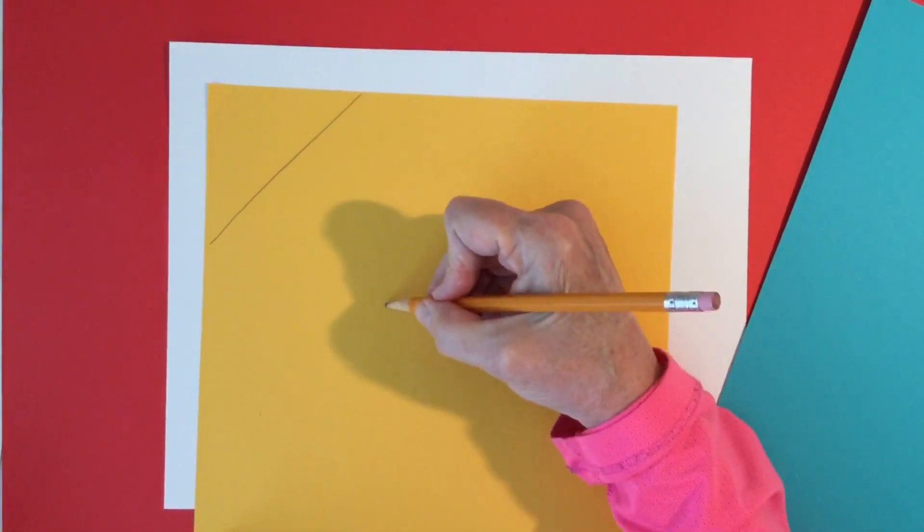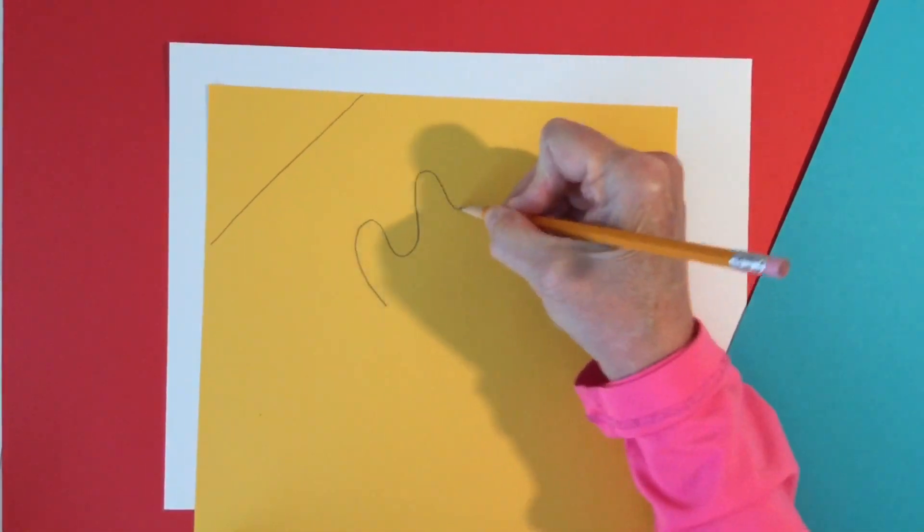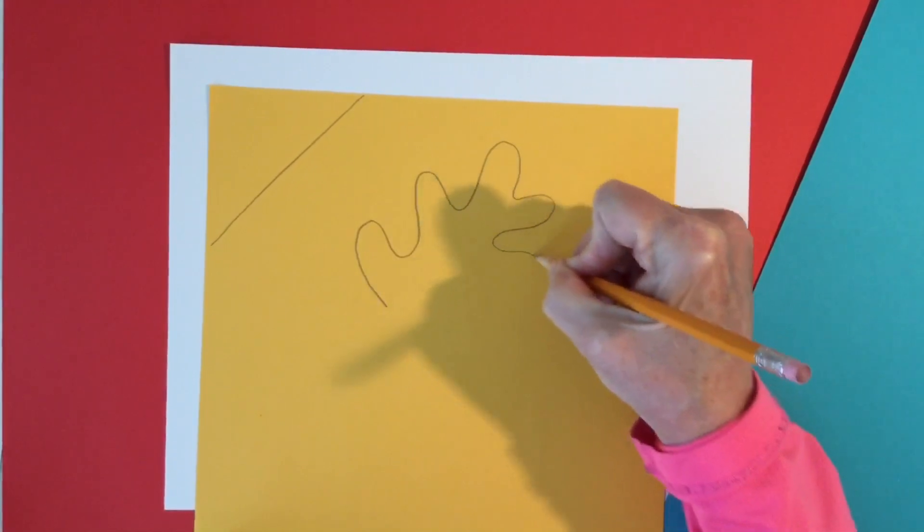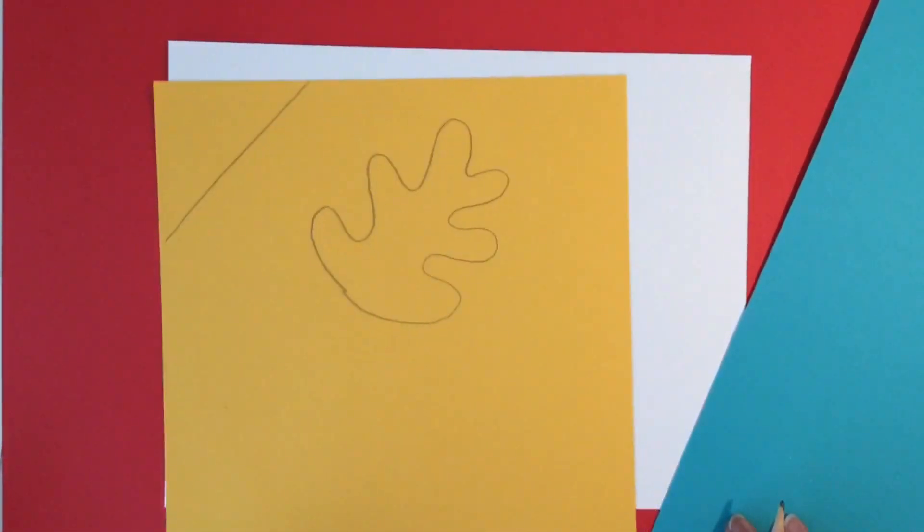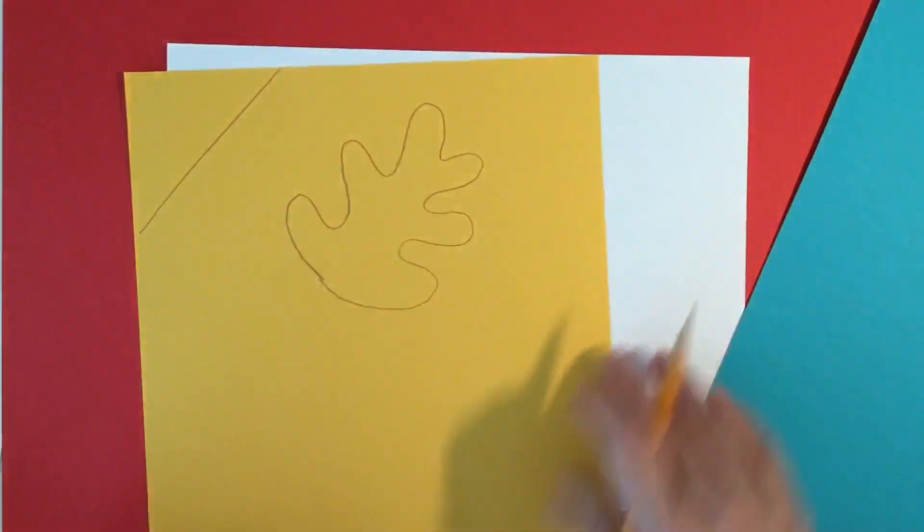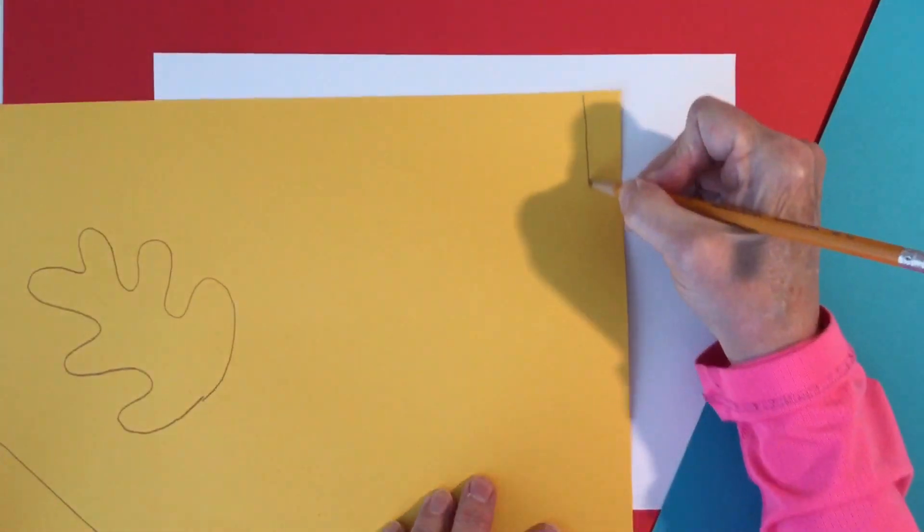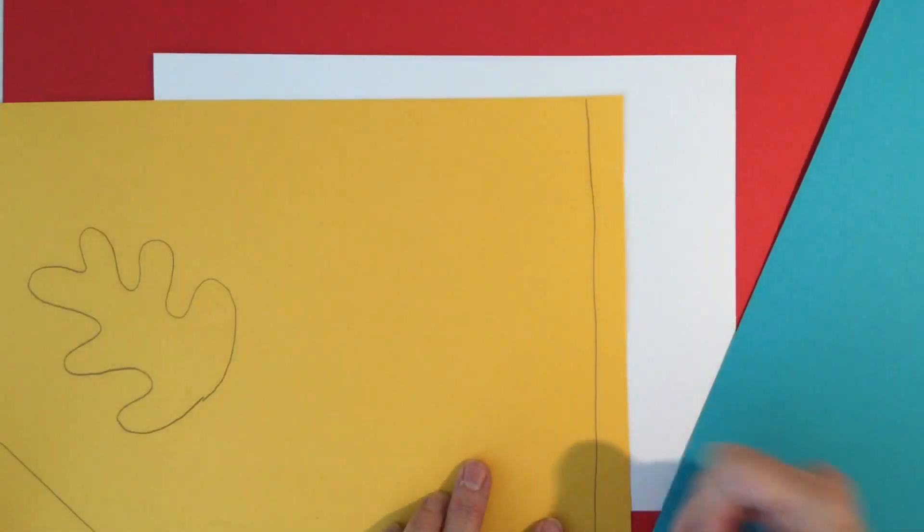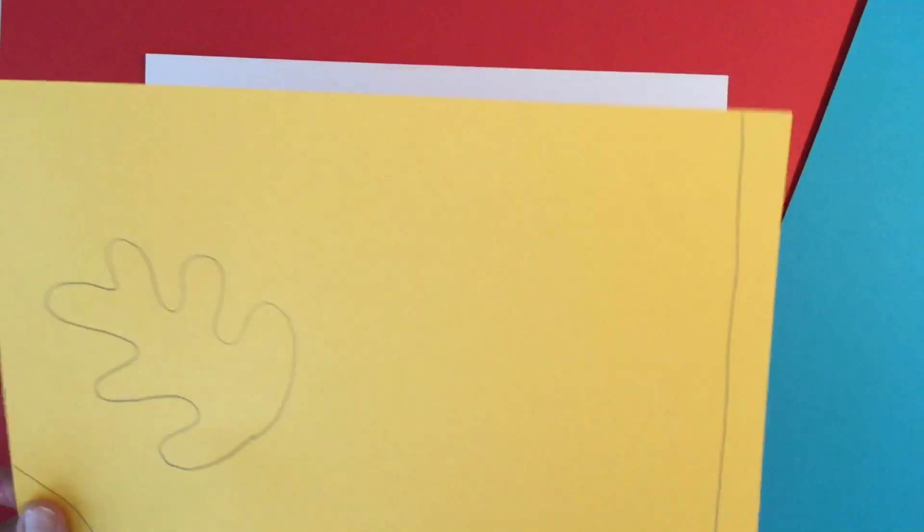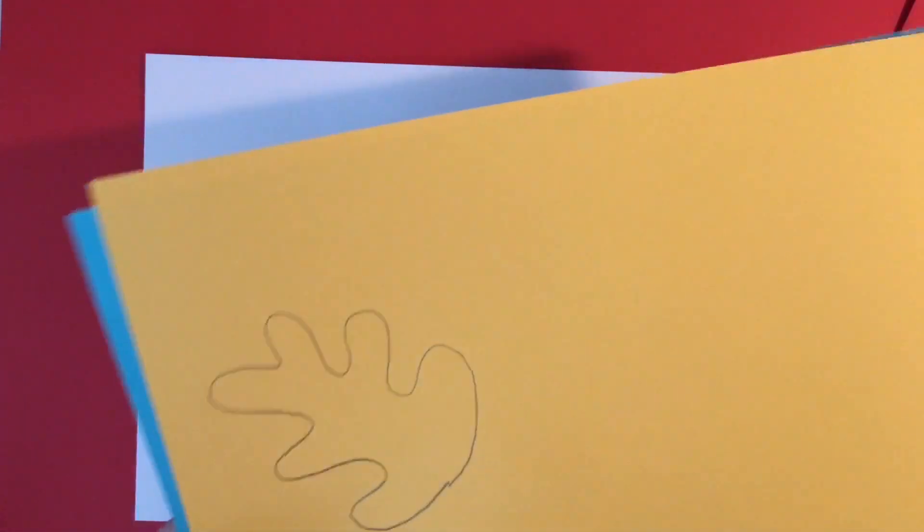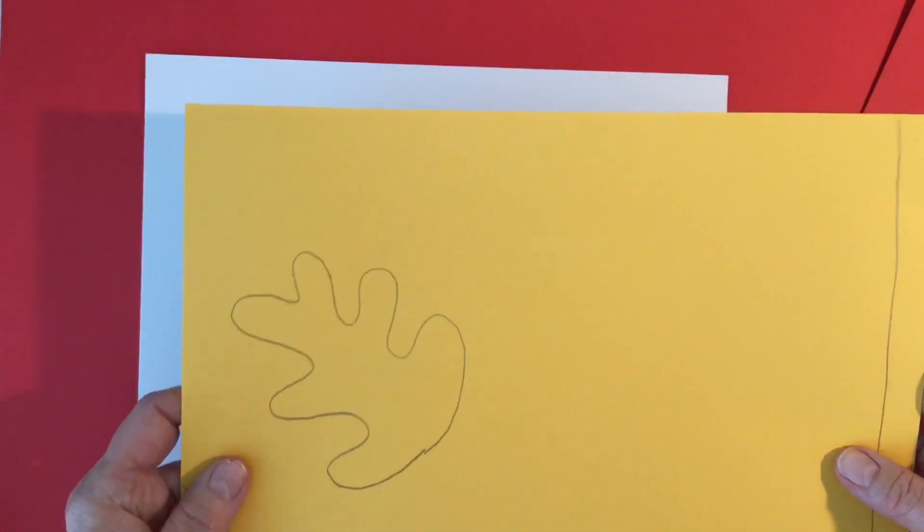Or I might want to do a freeform shape like this. And I can draw it like that. I might just want to use a strip of paper. So I can take the end of it and draw like this. If I want two of the same kind of paper, all I have to do is place a second sheet under it. And when I cut it, I will have two.